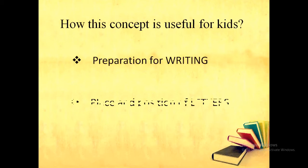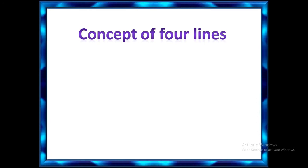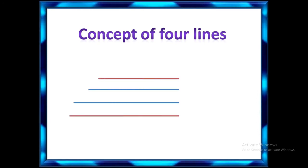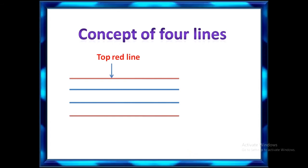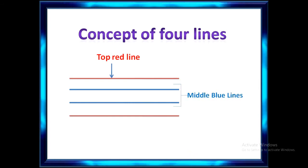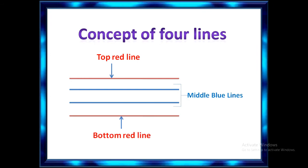This concept prepares the child for writing on paper, as the child gets a clear concept of the place and position of each letter on the line. Before going to the concept, first I want to clear the concept of four lines. This is the top red line. These two are the middle blue lines, and the last one is the bottom red line.